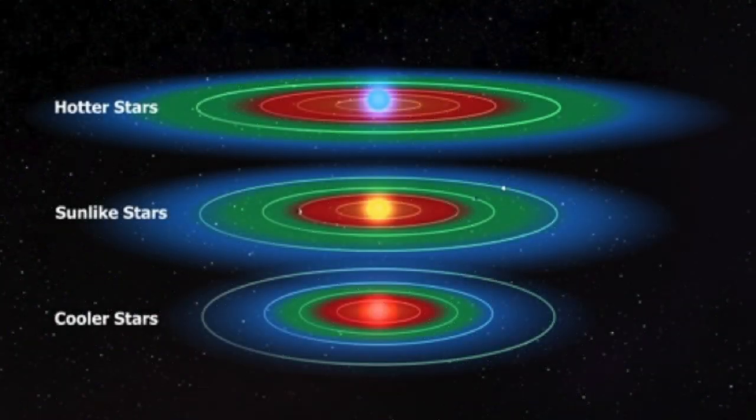The habitable zone, of course, will vary depending upon the star. For very hot stars that give out more energy, the habitable zone will be further away. And for very cool stars, the habitable zone will be much further in, much closer into the star. And so the habitable zone will vary depending upon the temperature and, of course, on the age of the star.